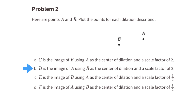Part b: D is the image of A using B as the center of dilation and a scale factor of 2. Start at B, head towards A, and move past A one full unit — this is where you plot D. Part c: E is the image of B using A as the center of dilation and a scale factor of 1 half. Start at A, move towards B, but stop halfway. This is where you plot point E.